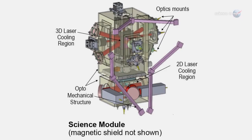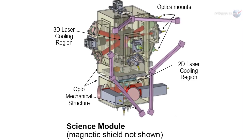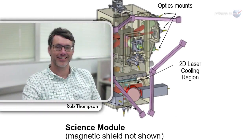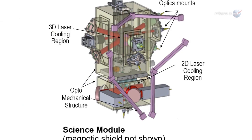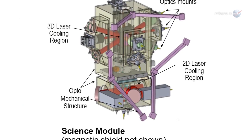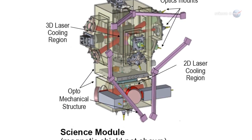We're going to study matter at temperatures far below anything found naturally, says Rob Thompson of NASA's Jet Propulsion Laboratory. He's the project scientist for NASA's Cold Atom Lab, an atomic refrigerator slated for launch to the space station in 2016.